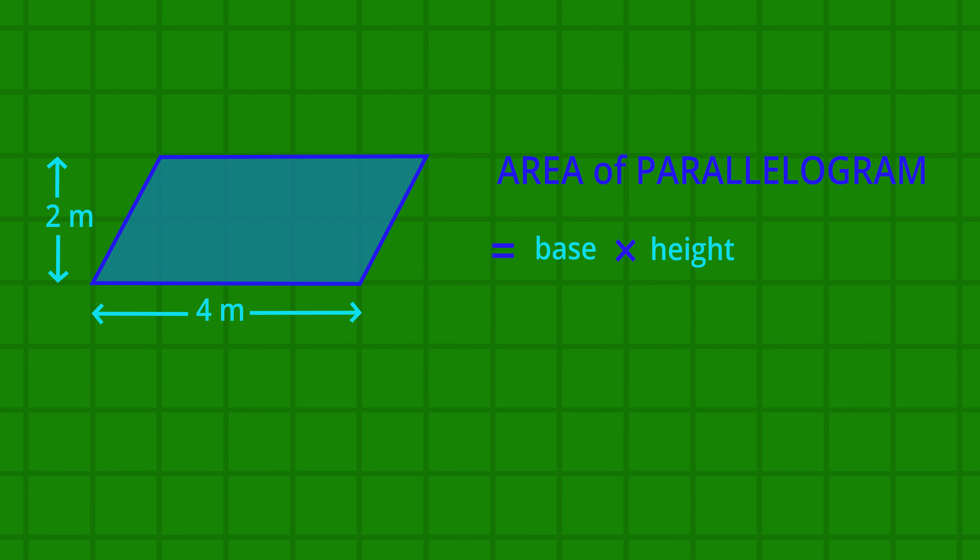Let's do an example. The base of this parallelogram is four meters. The perpendicular height, at right angles to the base, is two meters. So the area of the parallelogram is eight square meters.